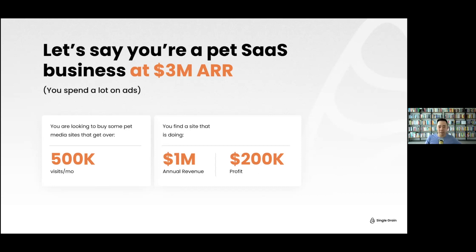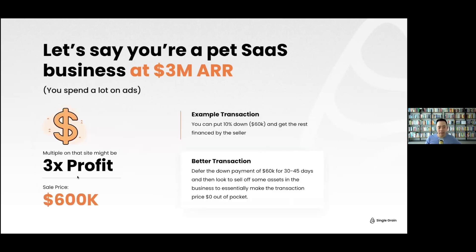The reality is businesses are built off of multiples. On a $200,000 profit company, you might put a 3x profit multiple on it — $200,000 times three equals $600,000. You might not have $600,000, but the terms matter more than the price itself.